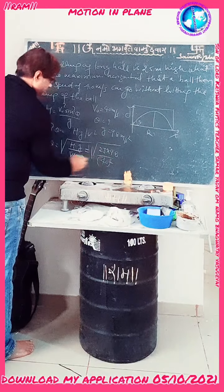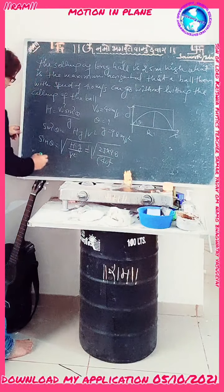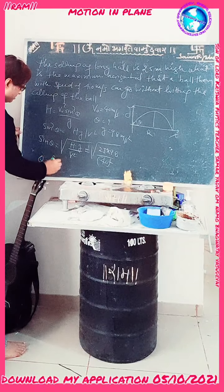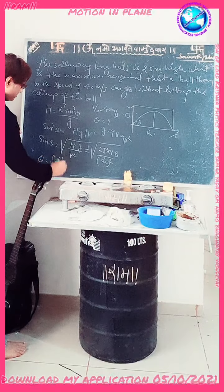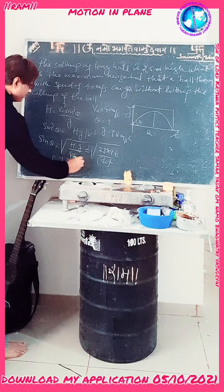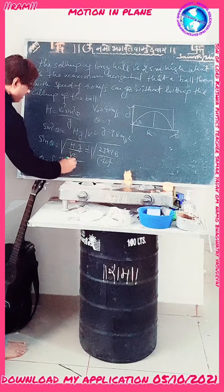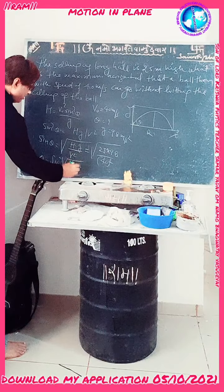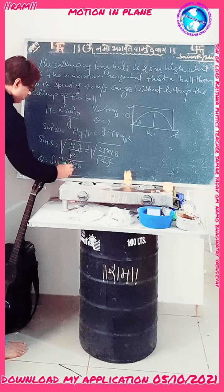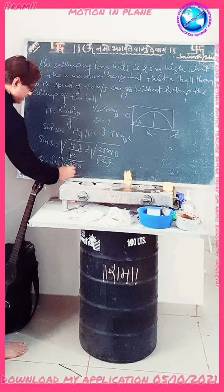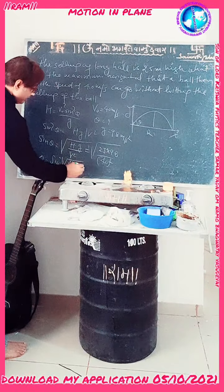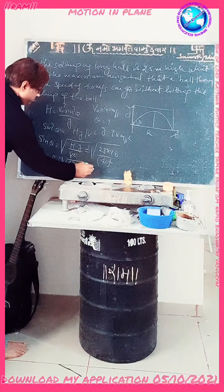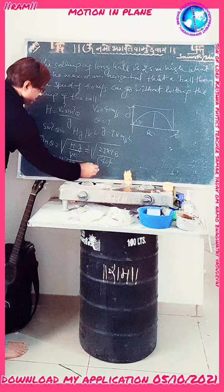Solving this, sin θ equals sin inverse of the square root of (25 × 9.8 divided by 40²). This gives us θ equal to 33.60 degrees.